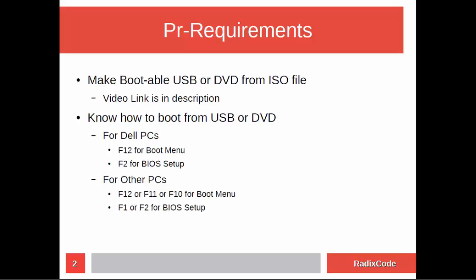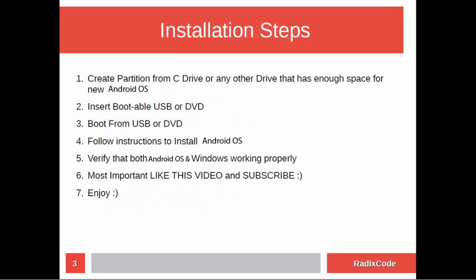So let's see what we are going to do. First of all, we will create an empty partition for Android OS from our C drive or any other drive that has enough space. After this, we will insert our USB drive which has Android OS, and then we will boot our computer from the USB and install Android OS.